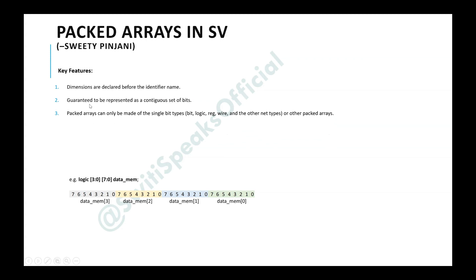The third point is packed arrays can only be made of single-bit types. These are data types whose size is by default 1 bit — examples are bit, logic, reg, and wire.